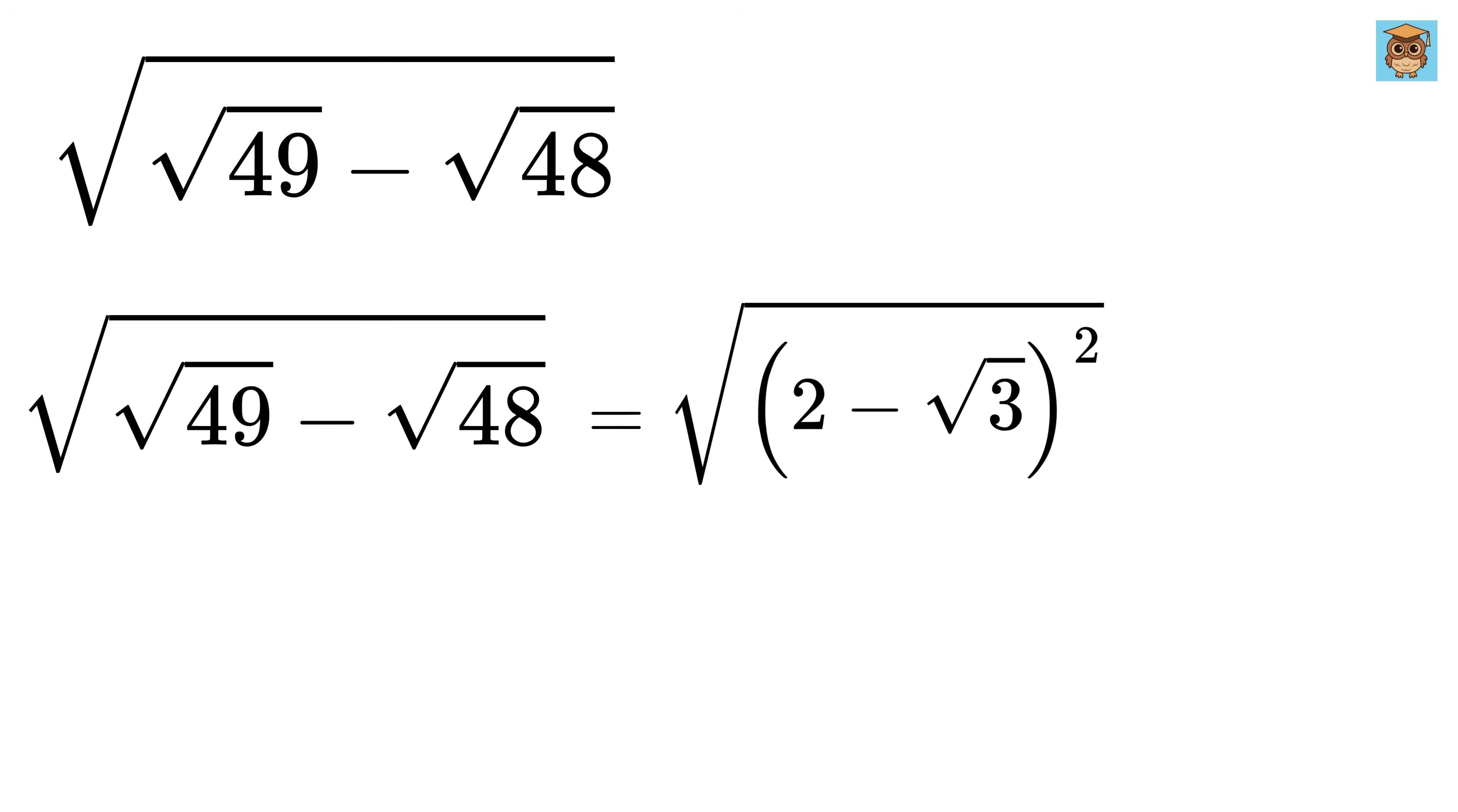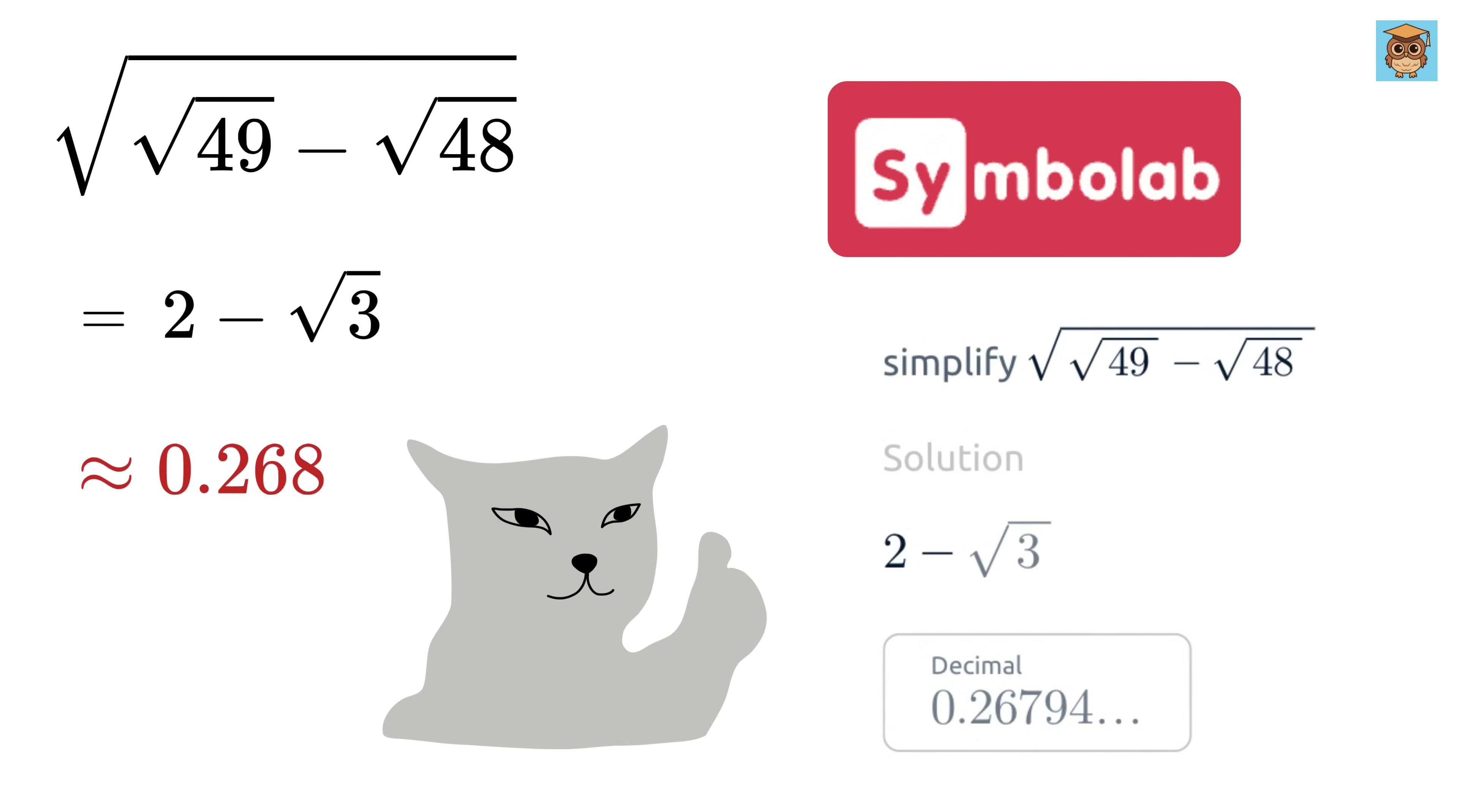Now if we take square root on both sides, this will become our original expression, and this square will be canceled with this square root, and it will become simply 2 minus square root of 3. And that's it. We know that the square root of 3 is 1.732, and thus this will become 0.268. So good!